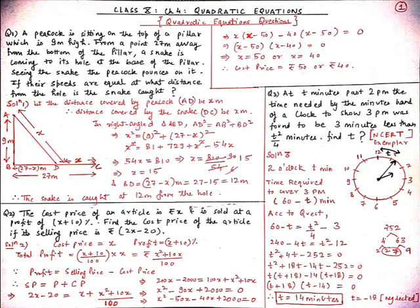From 60 − T = T²/4 − 3, multiplying through by 4 gives 240 − 4T = T² − 12. Rearranging, we get the quadratic equation T² + 4T − 252 = 0. By splitting the middle term, the factors are (T + 18) and (T − 14). Equating to zero gives T = 14 minutes or T = −18 minutes. Since time cannot be negative, T = −18 is rejected. Therefore, the time on the clock is 2:14 PM.